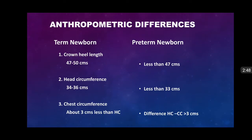The main differentiation is based on physical characteristics, but before discussing these, we should note there are also anthropometric differences between term and preterm babies. However, these anthropometric differences are not absolute. Term newborns who are small for date, malnourished, or hypoplastic may have lesser anthropometric measurements, and that is why they are not considered diagnostic. Nevertheless, we should know the normal anthropometric measurements for both term and preterm babies.